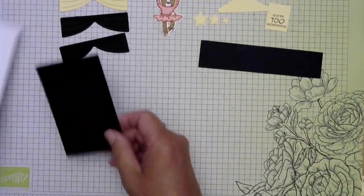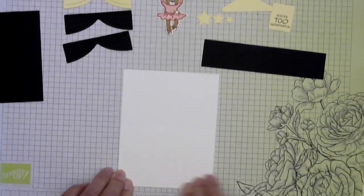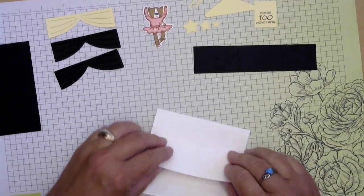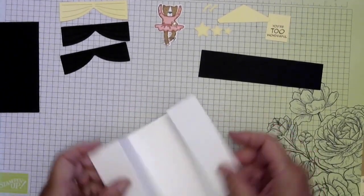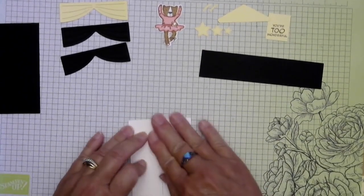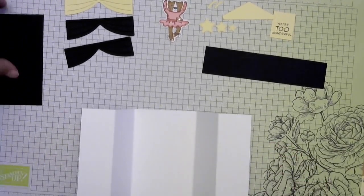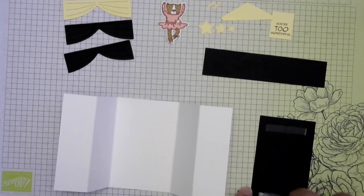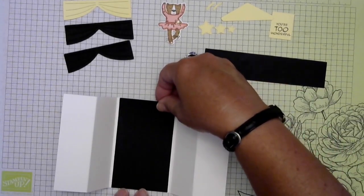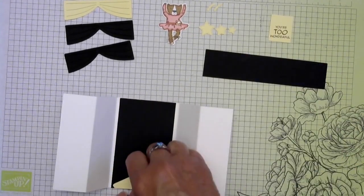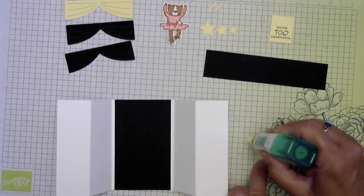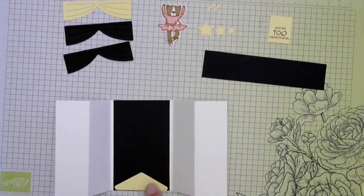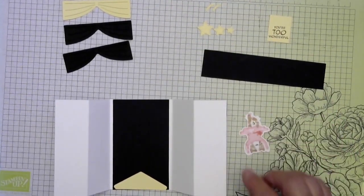Just go ahead and fold on our score lines. So then we can start putting it all together. And I'm going to pop our little leopard up with some dimensionals.